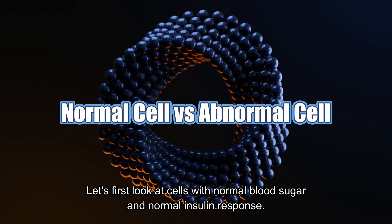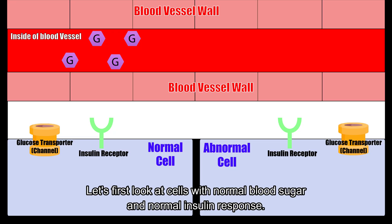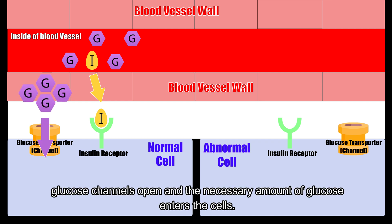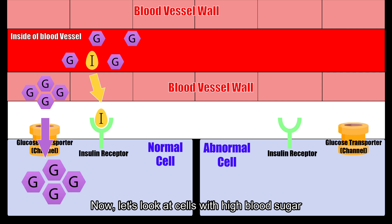Let's first look at the cell with normal blood sugar and normal insulin response. When insulin receptors are stimulated by insulin, the glucose channel opens and the necessary amount of glucose enters the cell — let's assume that the cell needs 4 units of glucose.